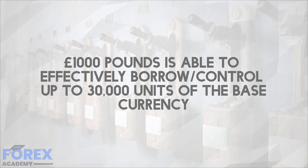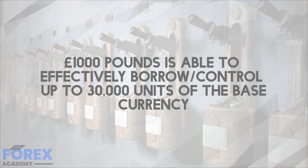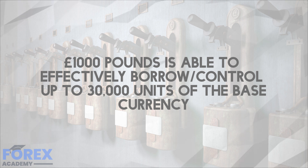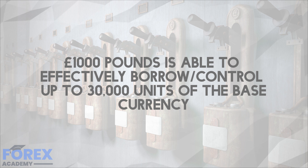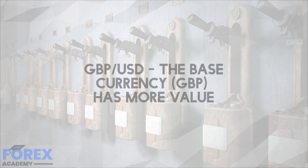Therefore, a trader with a fairly modest trade account of £1,000 is able to effectively borrow or control up to 30,000 units of the base currency, or £30,000, in order to trade the pound against the US dollar. This also depends on the pair's exchange rate.